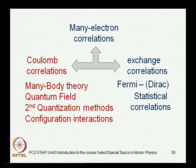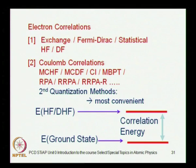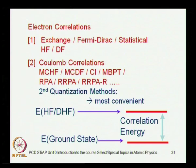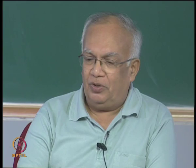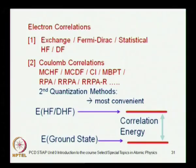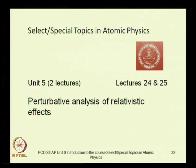One can extend the Hartree-Fock method to multi-configuration Hartree-Fock, or in the relativistic version to multi-configuration Dirac-Fock. Other methods for dealing with electron correlations include the random phase approximation and its relativistic version. The Hartree-Fock or Dirac-Hartree-Fock method accommodates statistical and exchange correlations but leaves out Coulomb correlations — and that is the fundamental limitation of the Hartree-Fock or Dirac-Fock method.